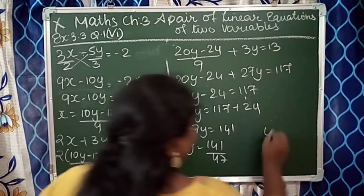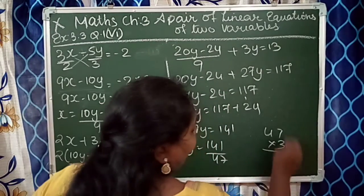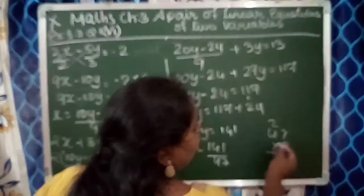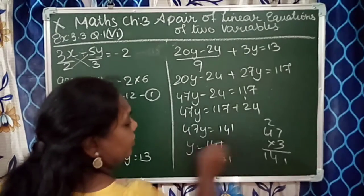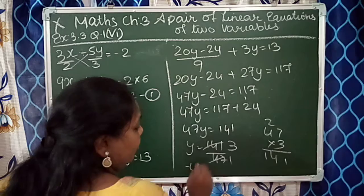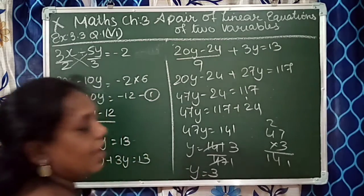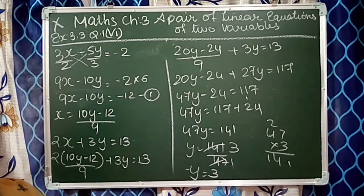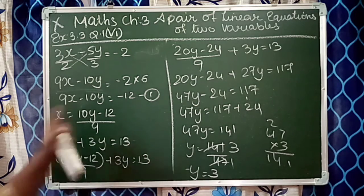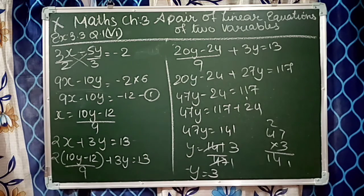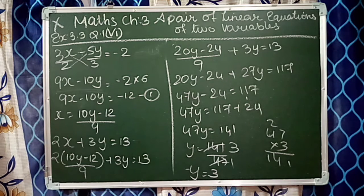Let's check in the 3 times table of 47. We get 141, so 3. y is equal to 3. We got y as 3. I hope this much is clear to you. Please take a screenshot so I can rub it out.